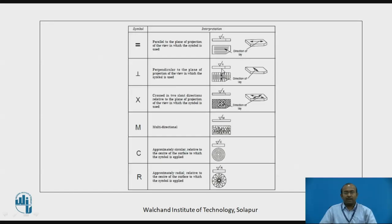Now the surface roughness patterns are like this symbol: parallel, perpendicular, cross, multidirectional, circular or radial. According to the various kinds of machining methods, these are the different patterns and can be used these symbols at a particular location.